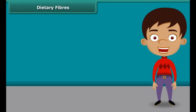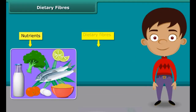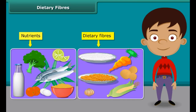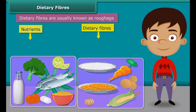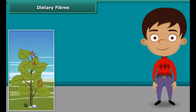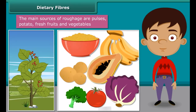Dear friends, besides nutrients, dietary fiber also plays an important role in our body — they are usually known as roughage. Roughage does not provide any nutrition to our body but adds bulk. They are found only in plants; pulses, potato, fresh fruits and vegetables are the main sources of roughage. This helps our body to get rid of undigested food.